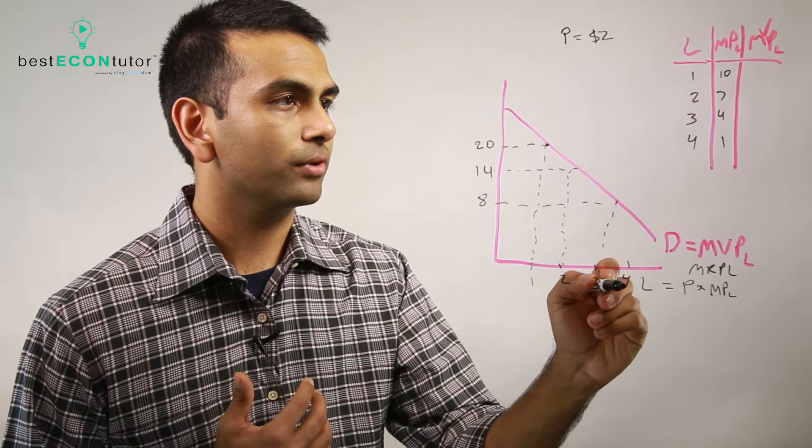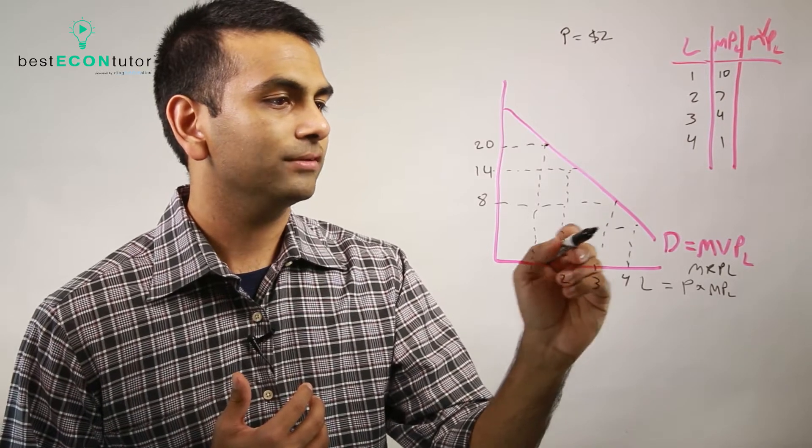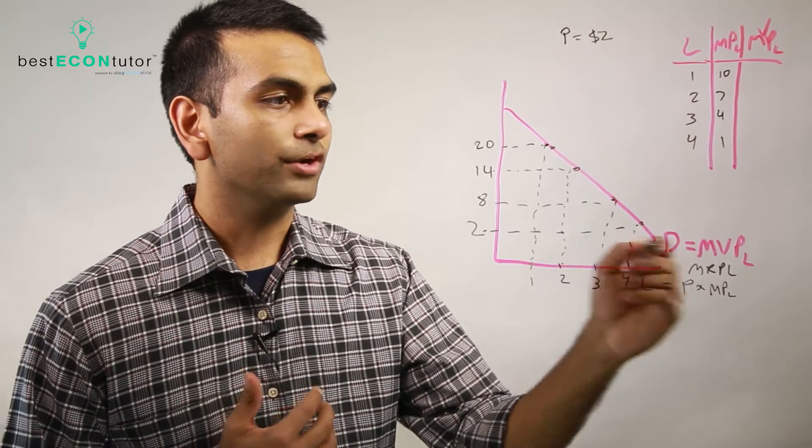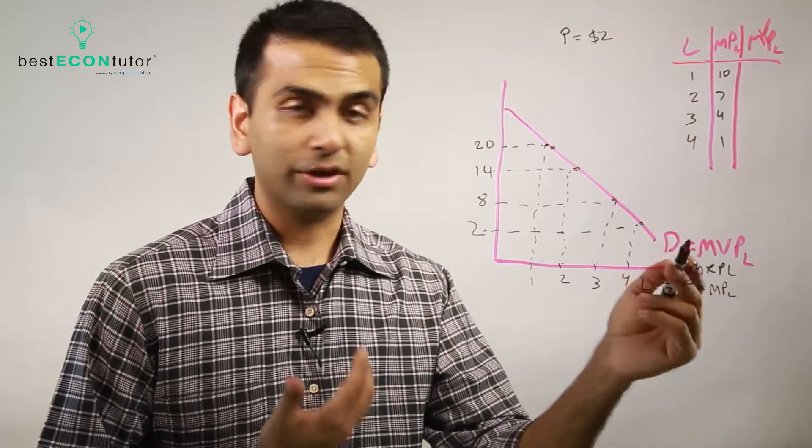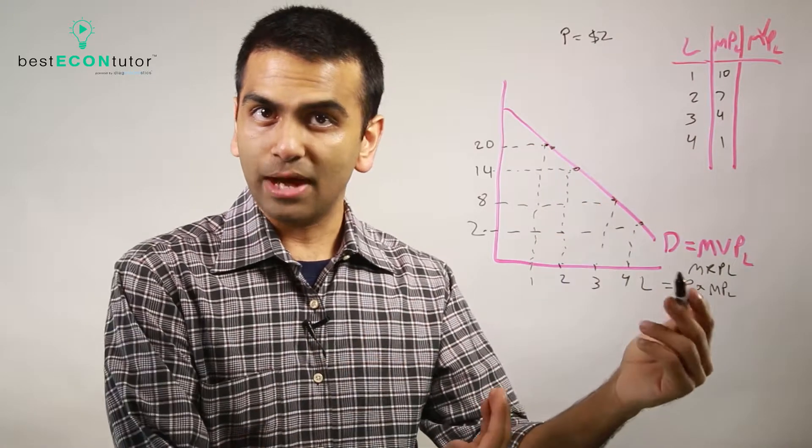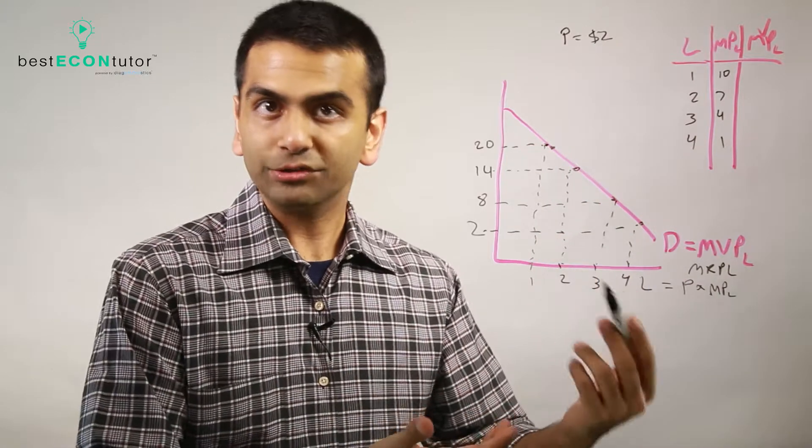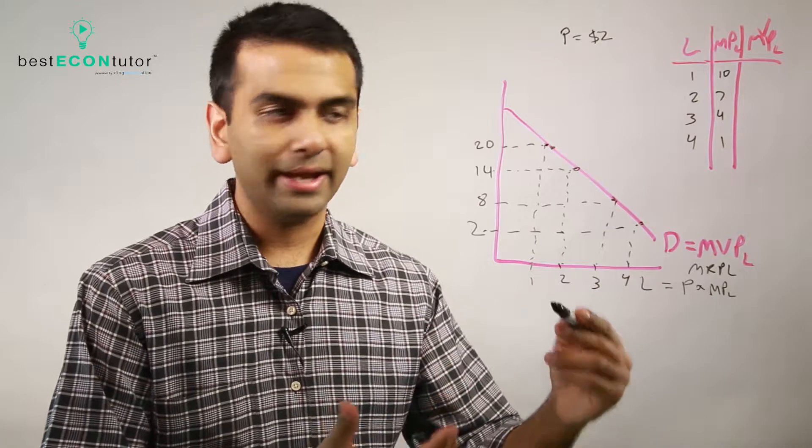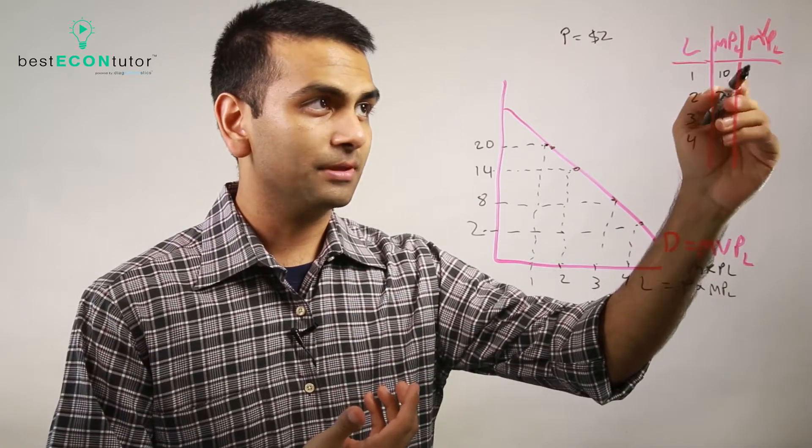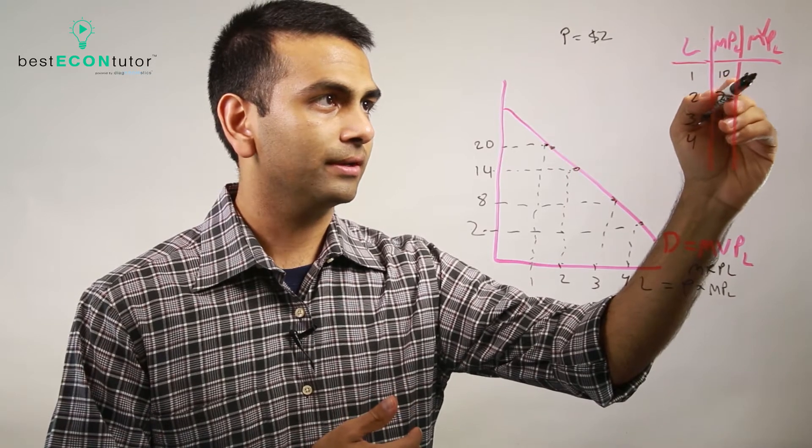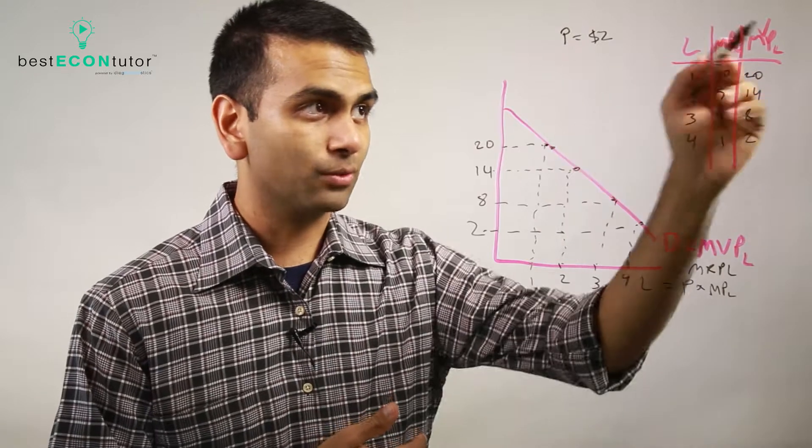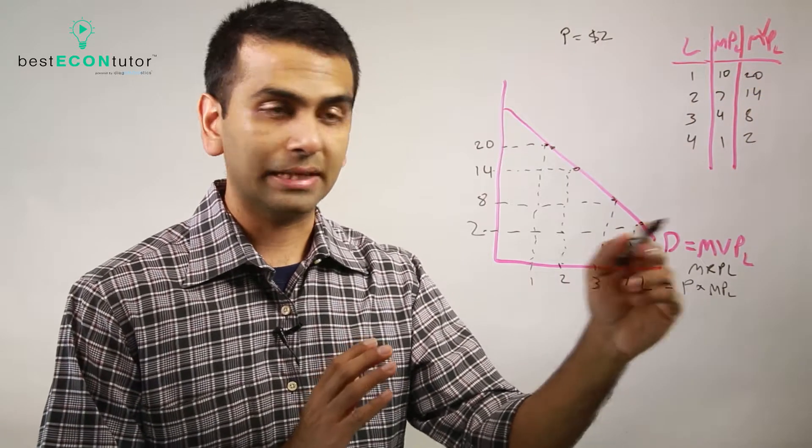And finally, the fourth worker made me just one pen, so I made two dollars off of them. So either way, these values are the marginal value product of labor, or marginal revenue product of labor. And usually it goes down because the more workers you hire, they kind of get into each other's way and the MPL tends to decrease. So here we could make the MVPL thing: twenty, fourteen, eight, two. And that, this is your demand curve, the Y values of your demand curve for labor.